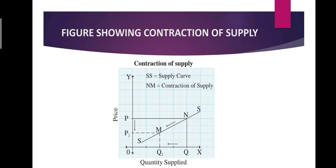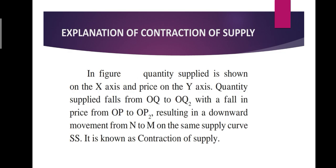Looking at the figure: on the OX axis, quantity supplied is shown, and on the OY axis, price is shown. When price was OP, the quantity supplied was OQ. Now price decreased from OP to OP2, and with the fall in price, supply also varied — supply decreased from OQ to OQ2. The movement from N to M on the supply curve denotes contraction of supply. SS is the supply curve here. Quantity supplied falls from OQ to OQ2 with the fall in price from OP to OP2, resulting in a downward movement from N to M on the same supply curve SS.